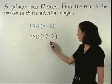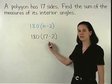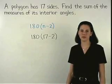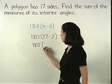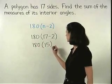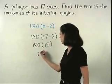Simplifying inside the parentheses first, 17 minus 2 is 15, so we have 180 times 15, which is 2700.